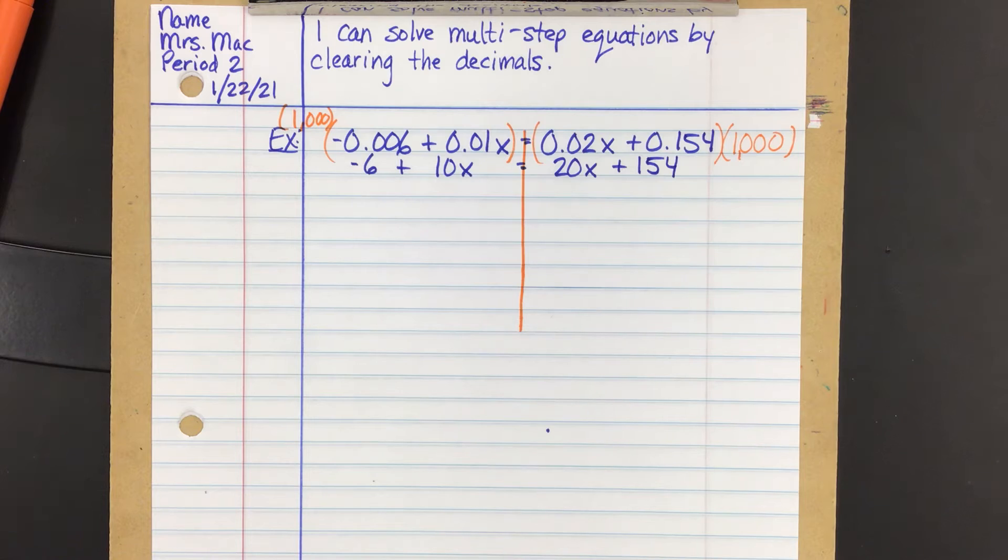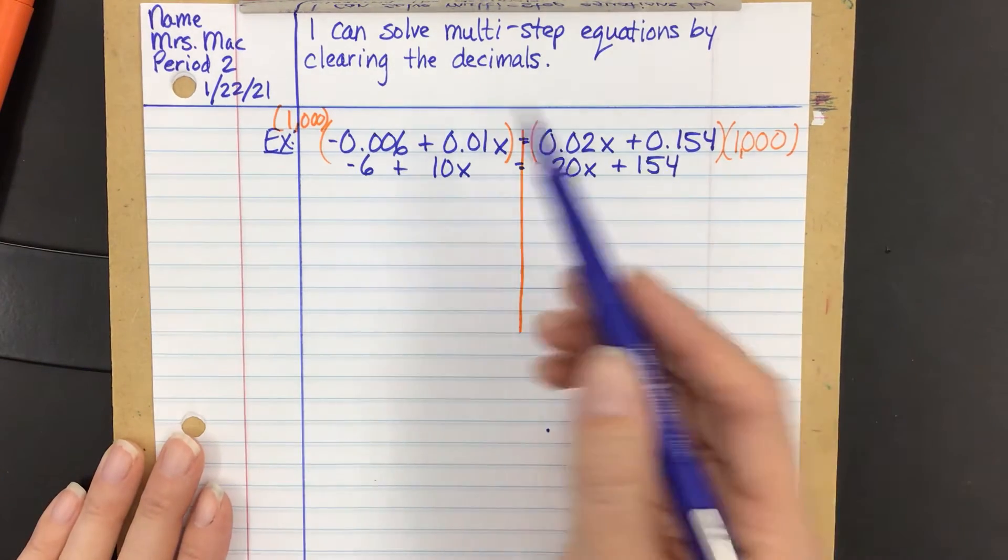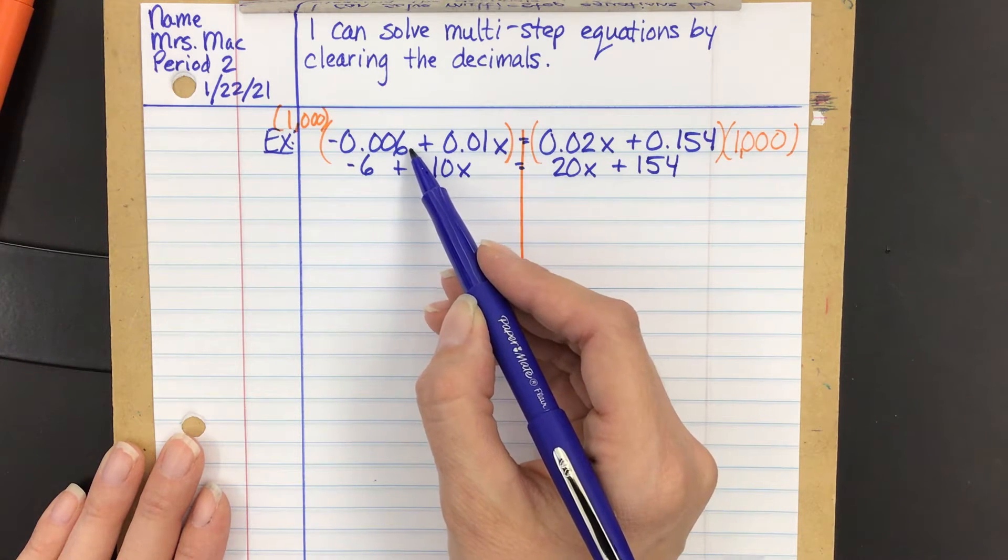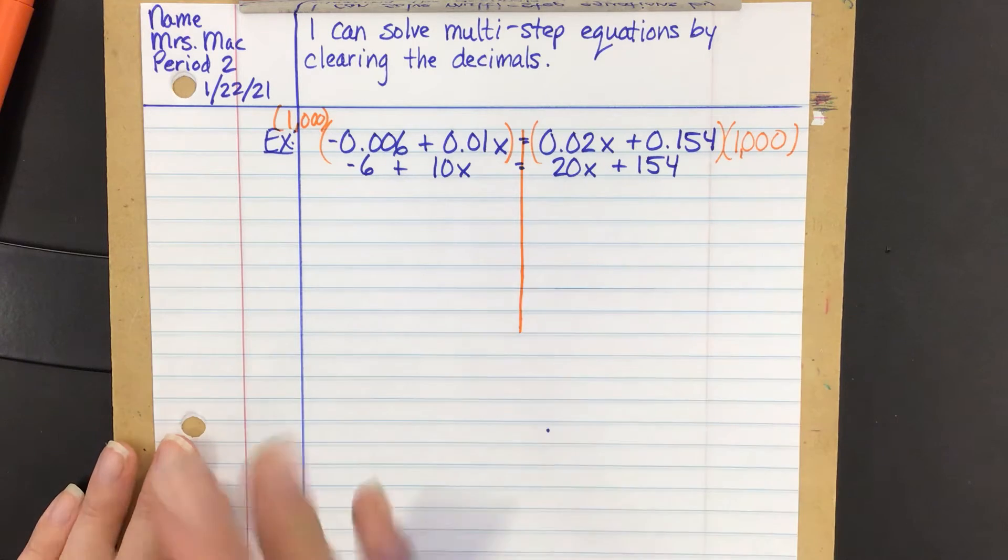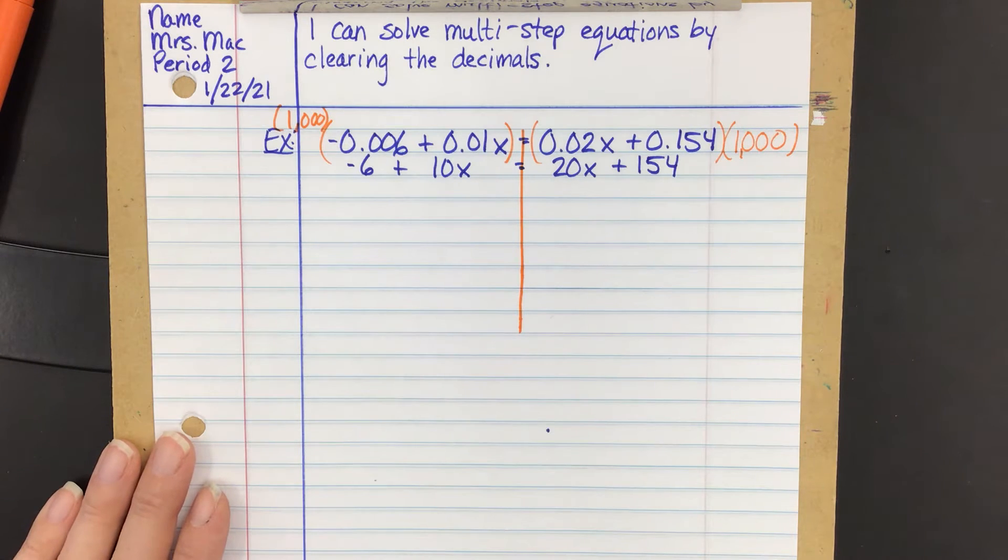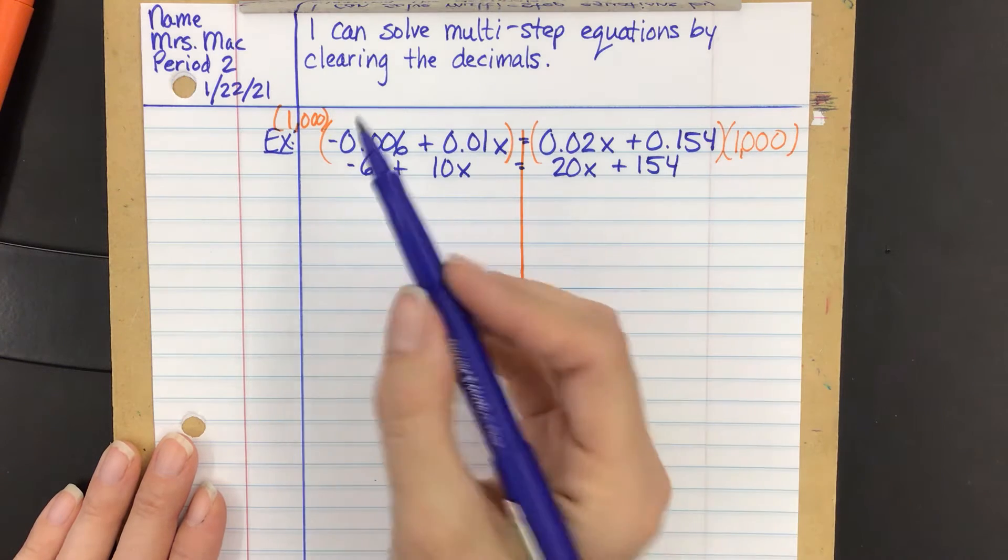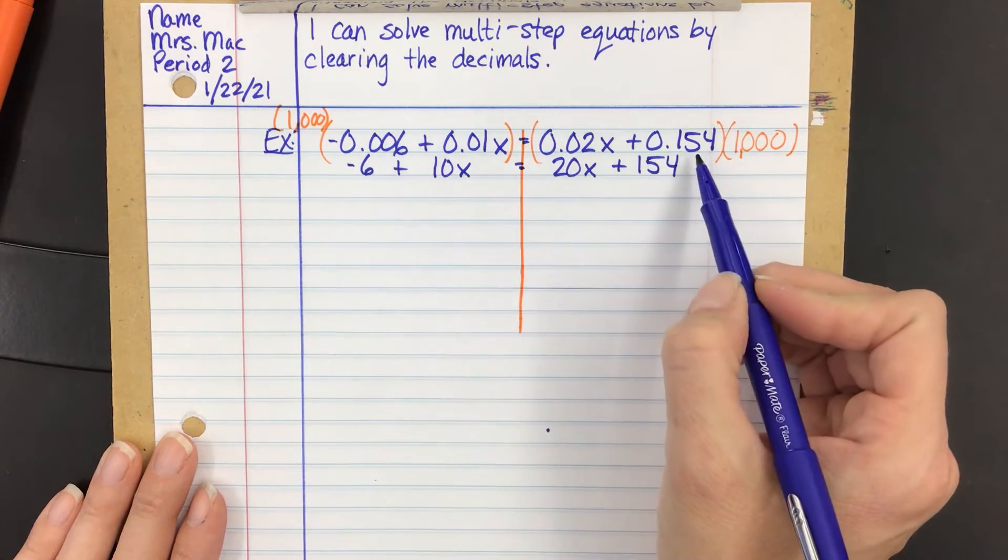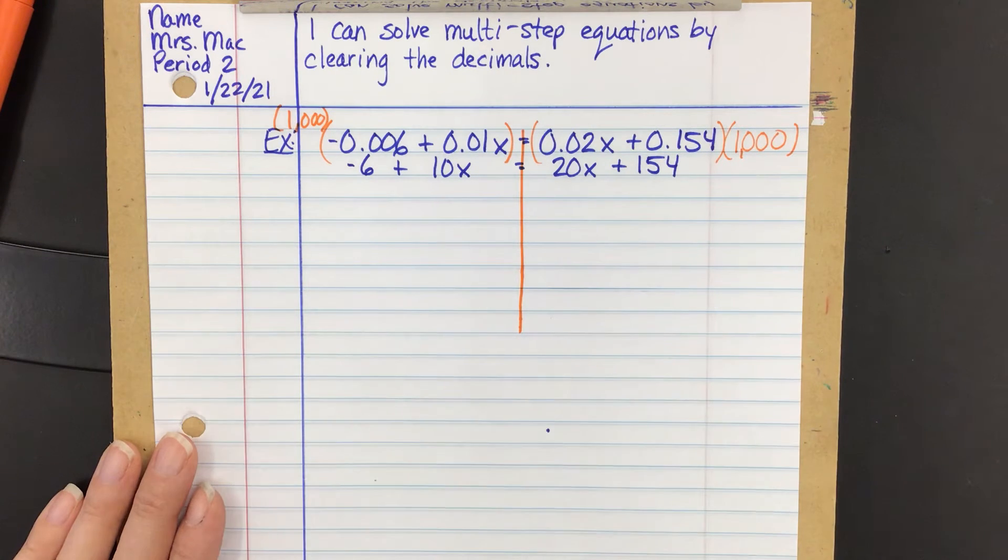Yeah, Maddie? If it was like 0.2, would you multiply by like 10? Yeah. So what you do is you pick the greatest number of decimal places. So in this case, it's the thousandths place here and here. So I chose to multiply by 1,000 because that would get rid of every single decimal. If I had only multiplied by 100, then that would have left us with negative 0.6. It would have left us with 15.4. So we would still have decimals in there. And I prefer to just get rid of all of them.